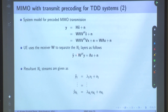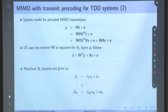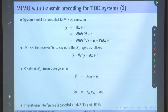Part of the interference is cancelled at the transmitter via V^H·V, and part is cancelled at the receiver. This is the receiver being designed and the precoder being designed. Both transmitter and receiver share the responsibility of cancelling inter-stream interference. That gives better performance than the case when only the receiver has to cancel the interference — higher capacity than when the transmitter did not have channel knowledge. Interstream interference is cancelled partly at the gNB transmitter and partly at the UE receiver.